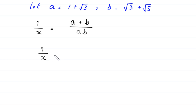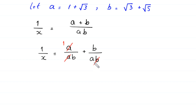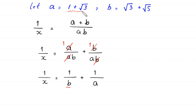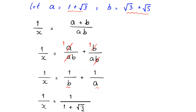We split the fraction: (a + b)/(ab) = a/(ab) + b/(ab) = 1/b + 1/a. Replacing a and b with their values gives 1/x = 1/(1 + √3) + 1/(√3 + √5).